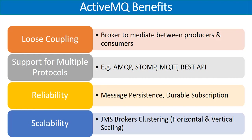Now that we have covered the basic concepts and use cases of Apache ActiveMQ, let's look into some of the benefits. Like any other message broker, Apache ActiveMQ comes with a lot of features and options. The first benefit is loose coupling — with a message broker in between, you have a mediator between producers and consumers, and they are no longer tightly coupled. Producers can continue their work once they've sent a message to the broker without waiting for the consumer.